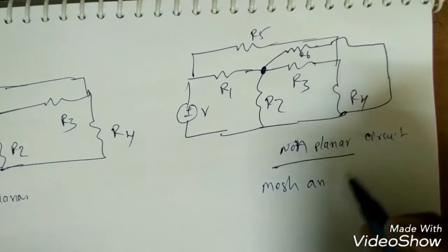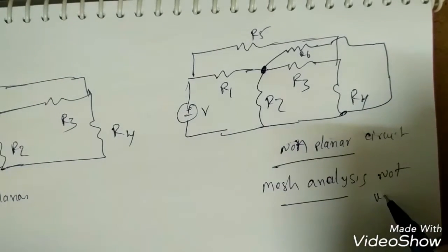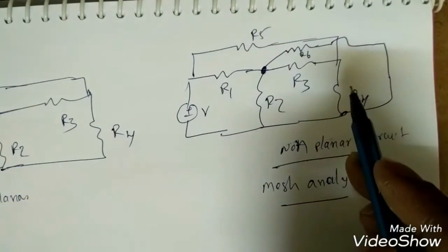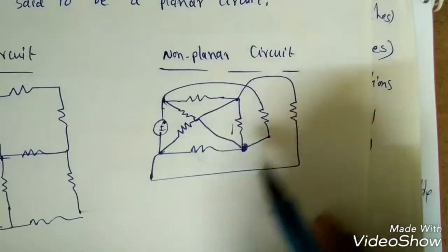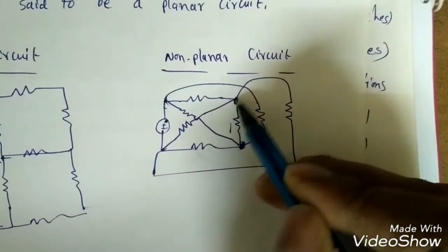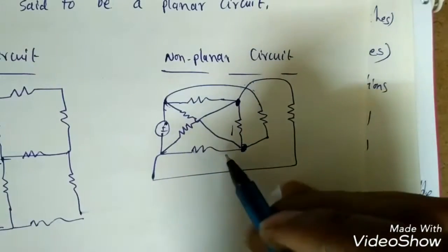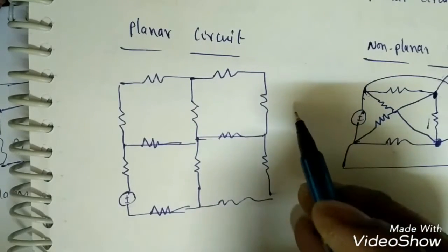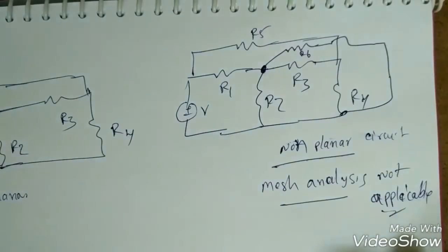Mesh analysis is not applicable for non-planar circuits — that is the condition. As another example, a circuit where one branch passes through another is non-planar. Conversely, a circuit where no branch passes through another is always a planar circuit. Now let's see an example of how to find mesh currents using mesh analysis.